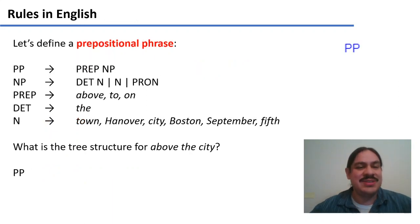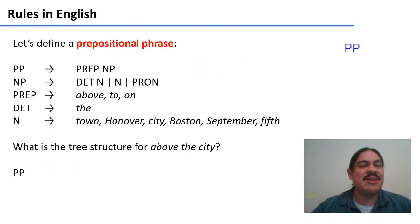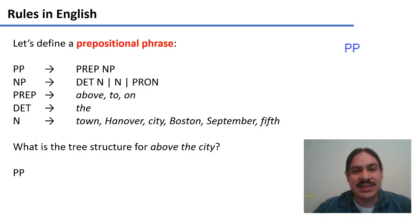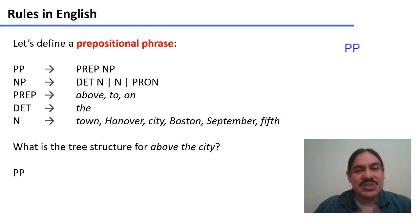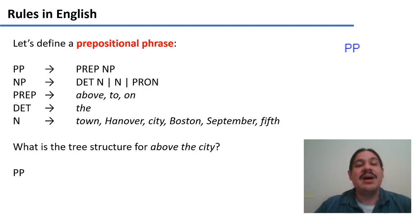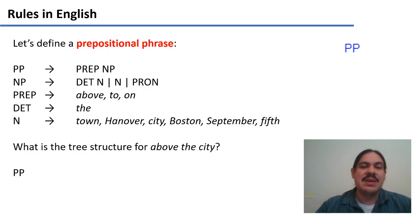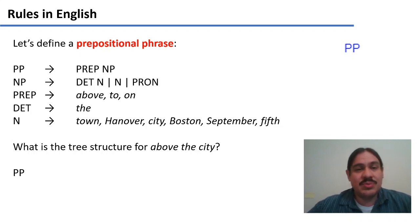Let's go back to English. We have the rules: a prepositional phrase consists of a preposition and a noun phrase. The abstract preposition non-terminal leads to the terminals 'above,' 'to,' and 'on.'